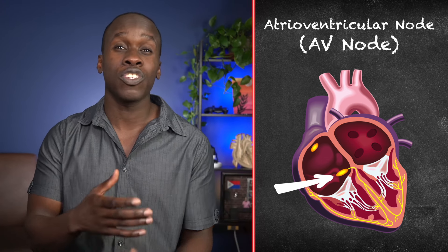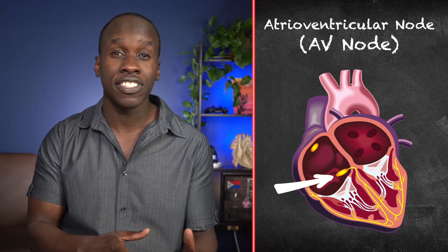For a brief review: the signal for the heart to contract starts at the SA node. That signal then spreads to the atria, causing them to contract. The signal then goes to the AV node and spreads to the ventricles via the bundle of His, the left and right bundles, and the Purkinje fibers. In this video, we're gonna build on this — but if any of that sounds confusing, make sure to check out my last video, linked in the description below.